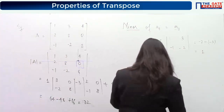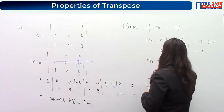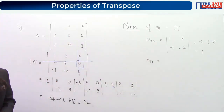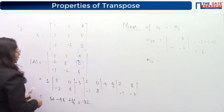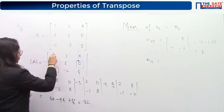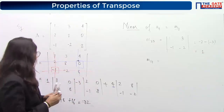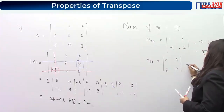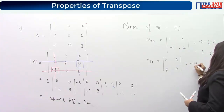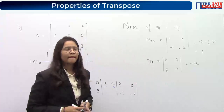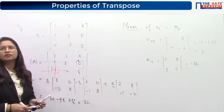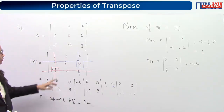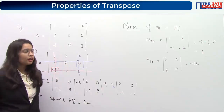Similarly, the minor of element at (3,1): delete the third row and first column, leaving 3, 4, 8, 0. The determinant is 0 minus 32 equals minus 32. So the minor M_31 equals minus 32. The minor is denoted M_ij and represents the determinant of the submatrix after deleting row i and column j.